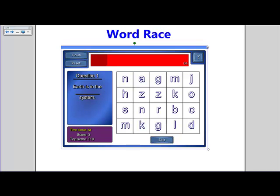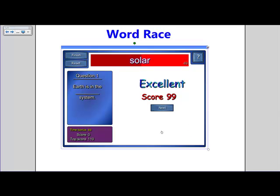It says earth is in the blank system. And I need to spell the word that matches. And you and I both know it's solar. So S-O-L-A-R. And then it tells us that we got it right. And then I can click next. And so the students get a little score.